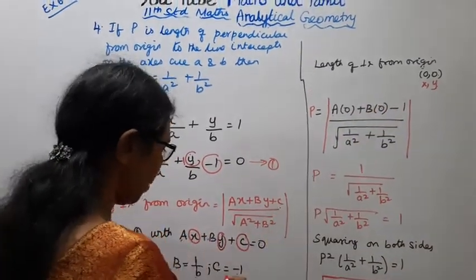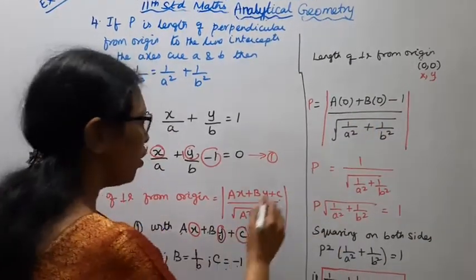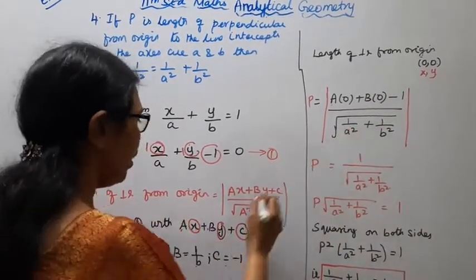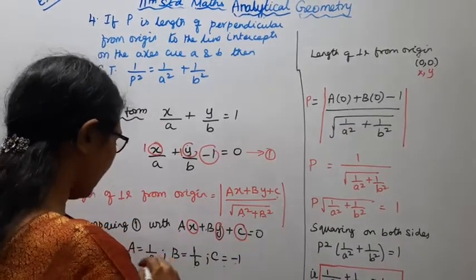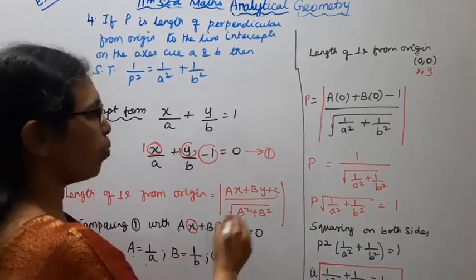c equals minus 1, divided by root of a square plus b square. a equals 1 by a, b equals 1 by b.